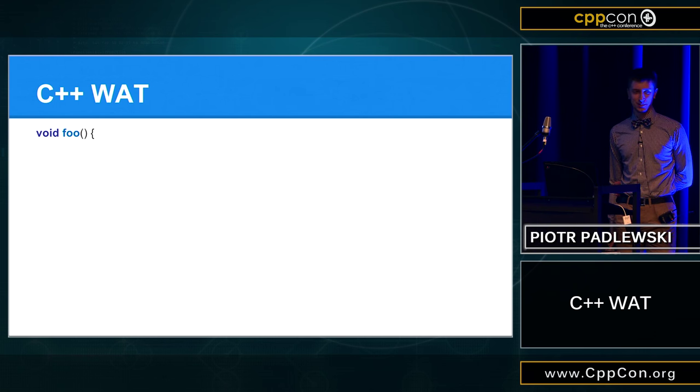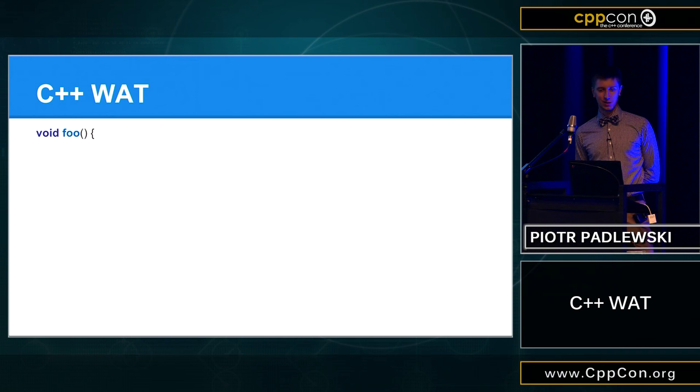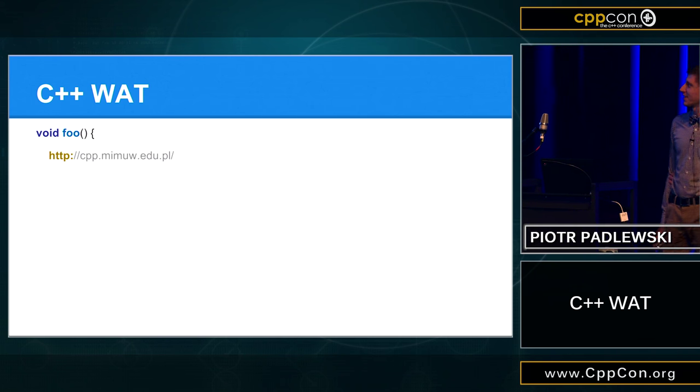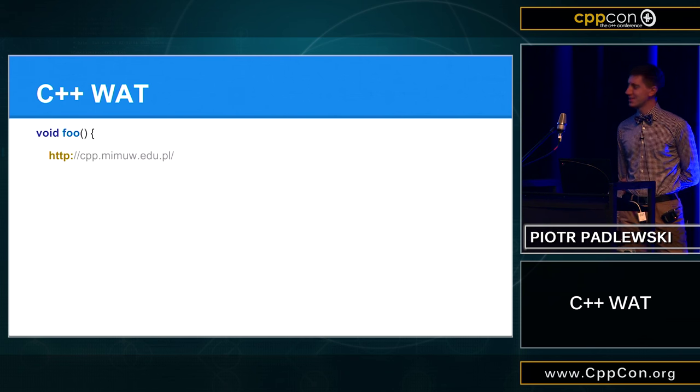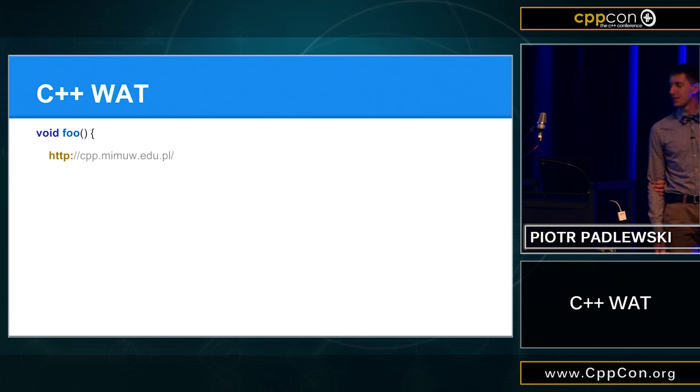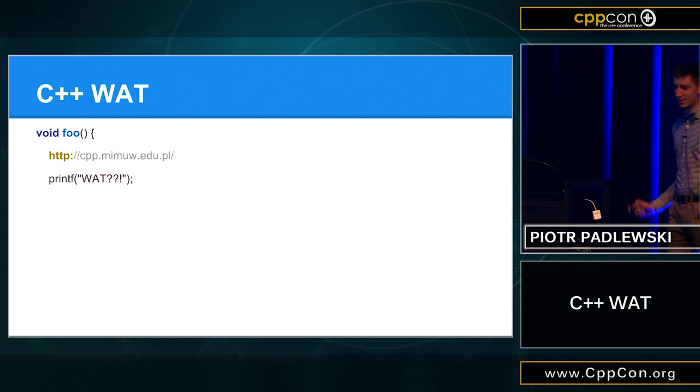So, C++ has a very nice feature. You can put URLs inside the code, like this, without any comment. But, in fact, there is some kind of bug, and you can put only one URL in your code. So, let me print some WAT. And C++ also has a very nice operator that does something like this, and goes to zero. And it works.